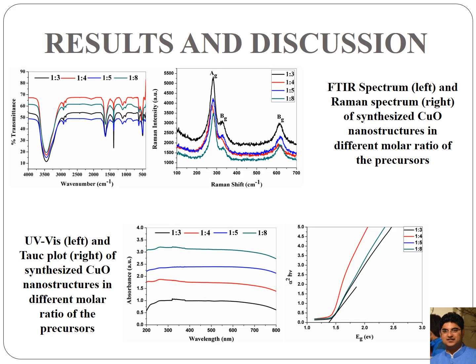Similarly, the FTIR and Raman spectra of the copper oxide nanostructures synthesized at different molar ratios were also studied. From the FTIR spectra, peaks around 3500 cm⁻¹ correspond to OH stretching, and peaks at lower wave numbers correspond to CuO stretching, confirming the presence of copper oxide nanostructures. In the Raman spectroscopy, three Raman active peaks characteristic of copper oxide nanostructures were observed. The FTIR and Raman spectra corresponded to standard copper oxide nanostructures.